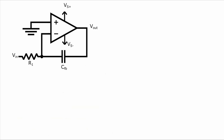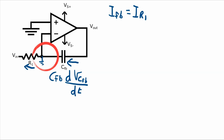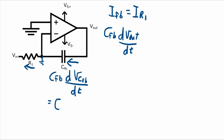Since no current goes into the inverting terminal, the current through this capacitor is going to equal the current through that resistor. The current through a capacitor is equal to the capacitance times the rate of change of the voltage across the capacitance over time. This voltage across the capacitor is the same as V out because this point is a virtual ground due to the negative feedback. So the current through the feedback capacitor equals C_FB times dV_out/dt.